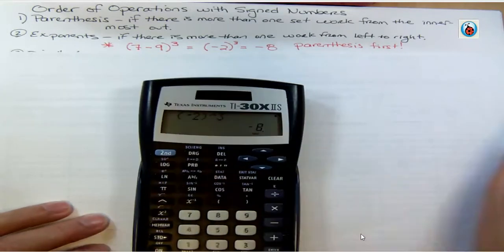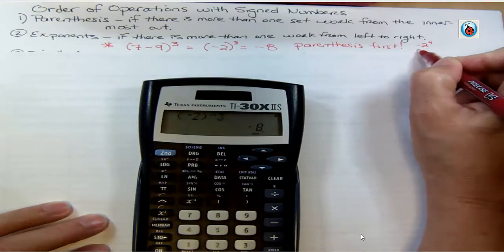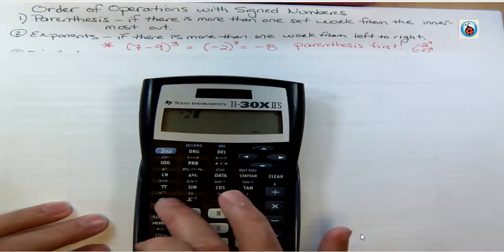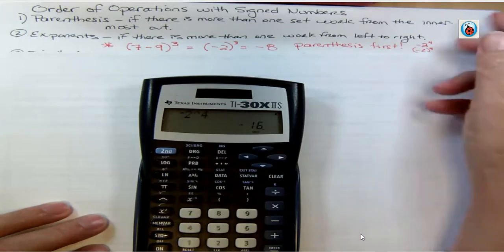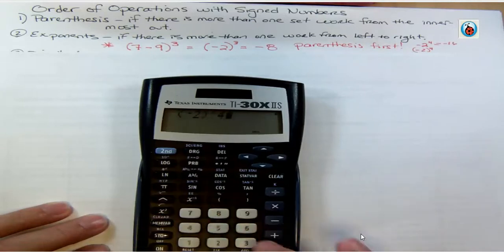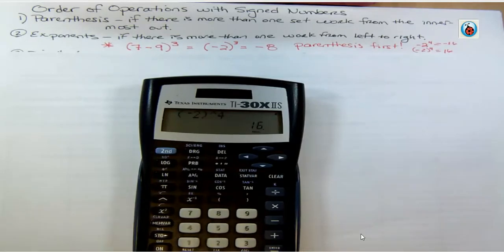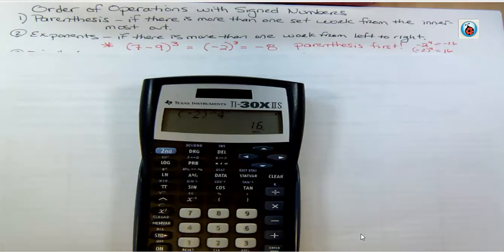Let's look at an example where that matters. If I had negative 2 to the fourth power as opposed to the quantity negative 2 to the fourth power: in the first case, with no parentheses, I get negative 16. In the second case, with parentheses around negative 2, I get positive 16. Sometimes parentheses don't matter if the power is an odd number, but it will matter if the power is even.